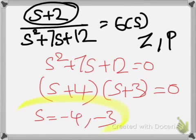So in this case -4 and -3 are the poles of the transfer function. The zeros of the transfer function are the roots of the numerator, and the poles are the roots of the denominator. Let us look at another example to make things clearer.